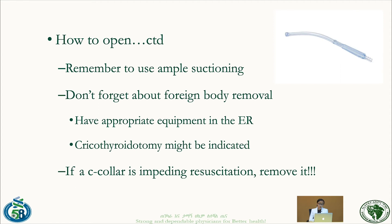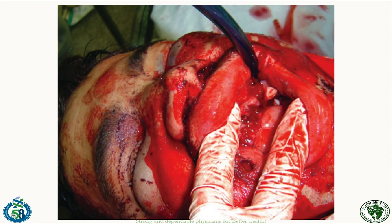In trauma patients, if a cervical collar is impeding resuscitation, remove it — the patient needs to be alive before we worry about cervical spine injuries. For example, a patient with bloody secretions and lost frontal teeth may have foreign body in the airway. While doing chest compressions, suction out blood; if bagging becomes difficult, continue compressions and use Magill forceps or other tools to remove the foreign body.